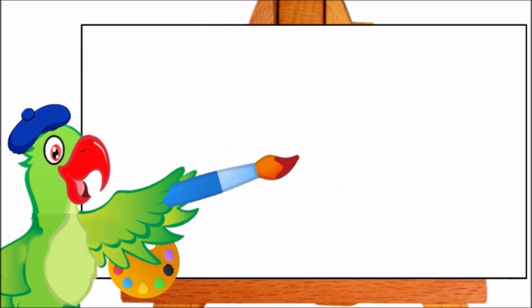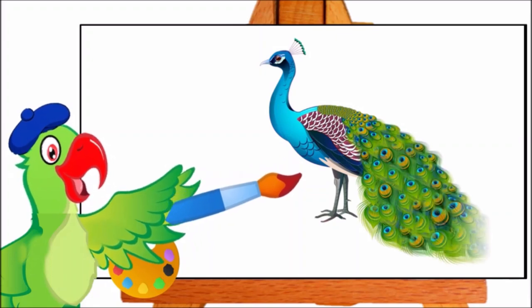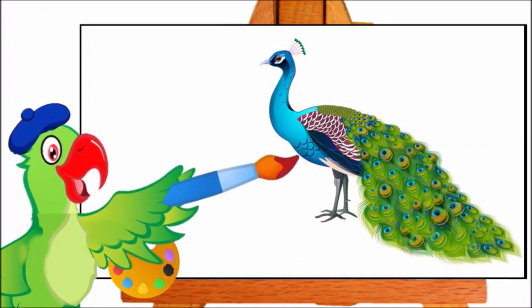Now look, what am I painting next? Oh, tell me children, what is it? It is the national bird. Very good. It is a peacock. P-per peacock.